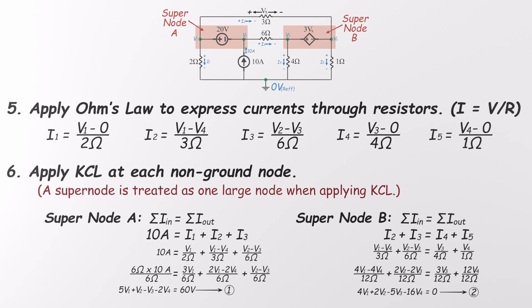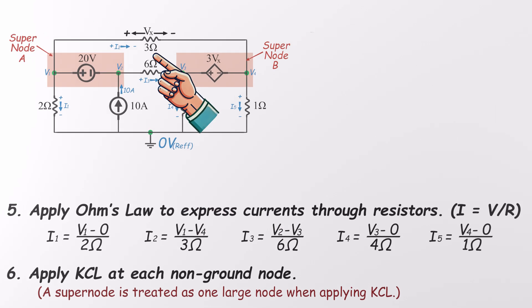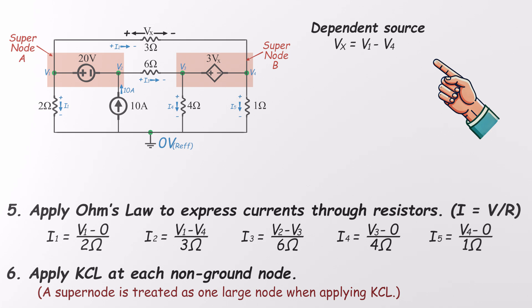Now we hit another snag. We've used KCL on both supernodes, but that only gave us two equations, and we've got four unknowns, V1, V2, V3, and V4. We need two more equations. Time to look at the dependent source. The voltage source here is labeled as 3Vx, where Vx is the voltage across a certain resistor. Based on the circuit, Vx equals V1 minus V4. So yes, it seems like we're introducing another unknown. But don't worry, we'll keep everything in terms of the node voltages.